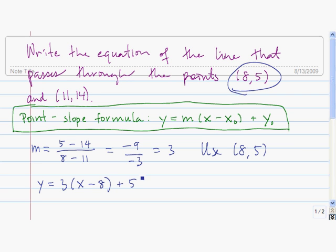When I find the equation of a line, I often like to leave it in slope-intercept form, so I'm going to go ahead and clean this up. So I'll distribute the 3, and I get y equals 3x minus 24 plus 5.